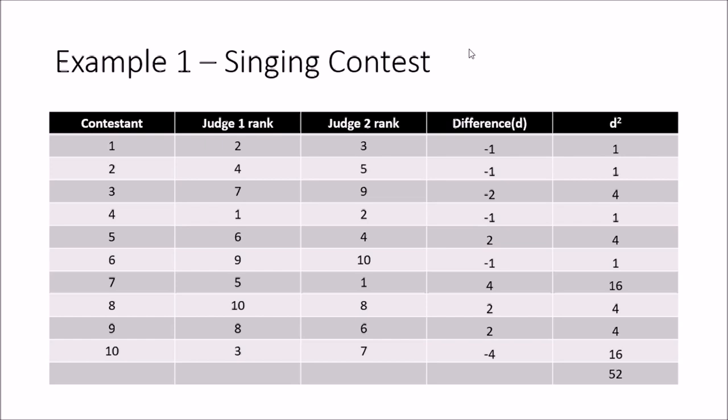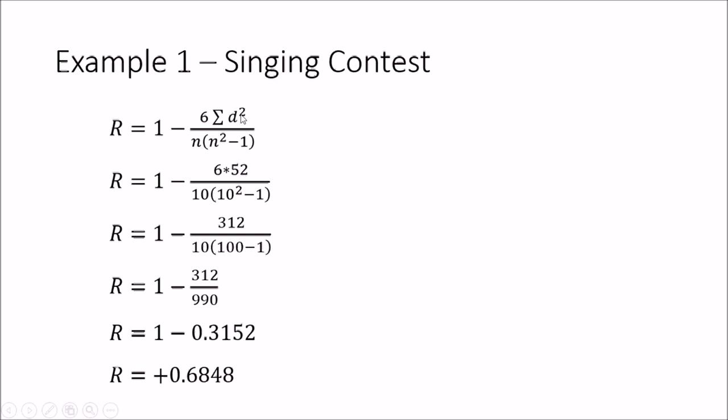We compute the difference between ranks for each contestant, then square those differences. The total, sigma d-squared, comes to 52. Substituting into the equation — six times 52, divided by 10 times (100 minus 1) — and simplifying gives a final answer of plus 0.684. This means the two judges are thinking somewhat alike, with a fairly strong positive correlation of close to plus 0.7.